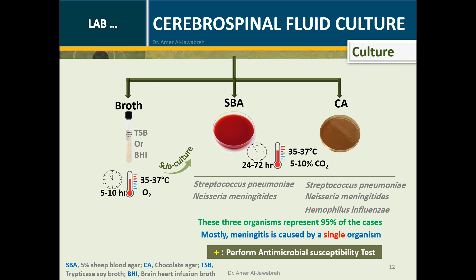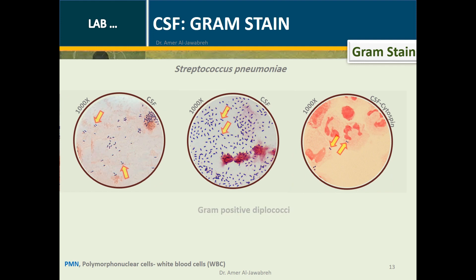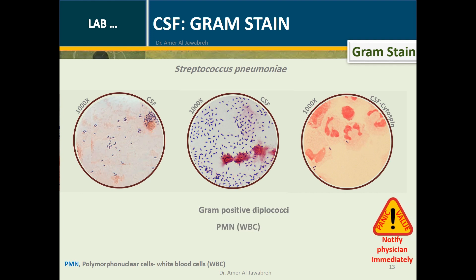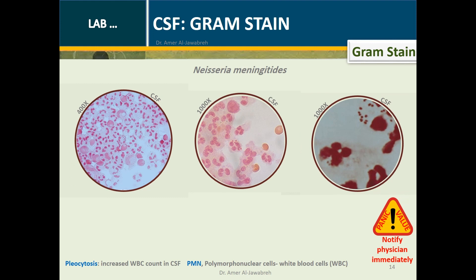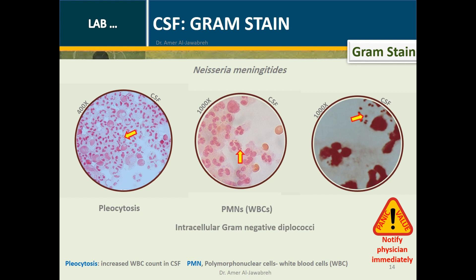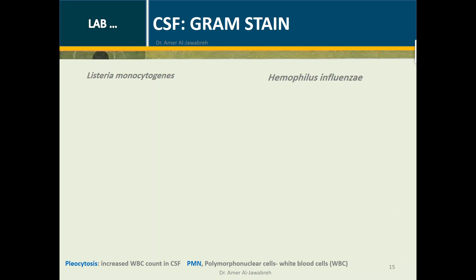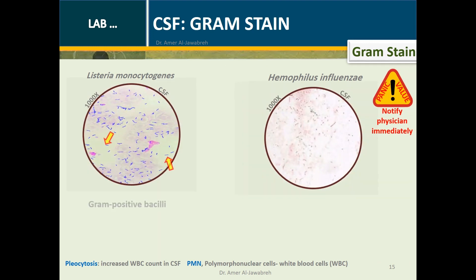CSF Gram Stain findings: Streptococcus pneumoniae appears as gram-positive diplococci. Any organism demonstrated by gram stain is a panic value. Neisseria meningitidis presents with pleocytosis (increased neutrophil count) and intracellular gram-negative diplococci. Listeria monocytogenes appears as gram-positive bacilli. Haemophilus influenzae appears as gram-negative coccobacilli.